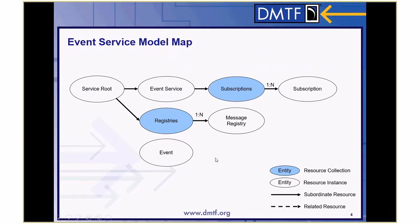Here's what the event service model looks like. Right off the service root, you've got an event service with a subscriptions collection, and it can have one or more subscriptions in it. When you're done with your eventing service listening and don't want to receive any more events, you delete that subscription. There's also a collection of registries right off the service root, and those have a message registry file in them that then points to message registries. The events themselves don't really hang off the service root because they're heading the other direction to the client — they get posted by the service to the URL that's in the event subscription.